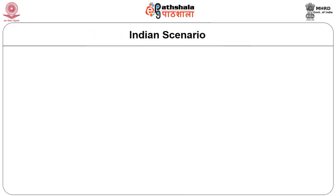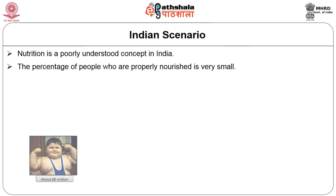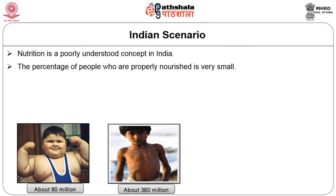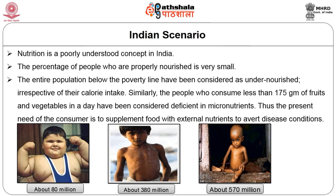Coming to the Indian scenario in nutraceutical research, nutrition is a poorly understood concept in India. The percentage of people who are properly nourished is very small. This imbalance of nutrition gives rise to three categories: those who are over-nourished (about 80 million people), those who are under-nourished (about 380 million people, including the entire population below the poverty line), and those who consume less than 175 grams of fruits and vegetables per day, who are considered deficient in micronutrients. Thus, the present need is to supplement food with external nutrients to avoid disease conditions.